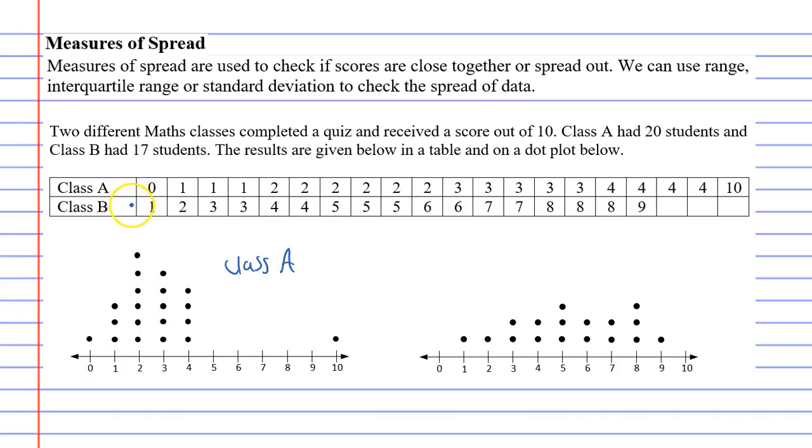Class B is the other math class, and this is much more spread out. They range all the way from 1 mark to 9 marks, and they are in the dot plot below.